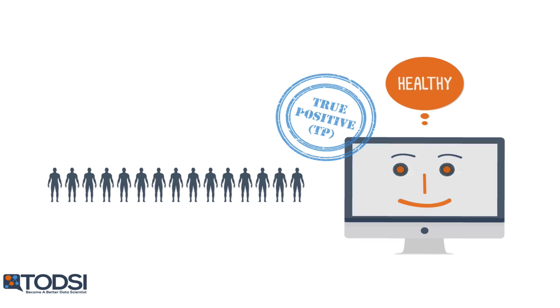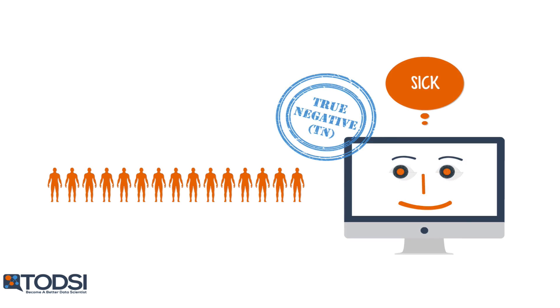Let's illustrate this by looking at a two-class classification problem, where a data point is either considered positive or negative. If the model makes a positive classification, there are two possibilities. The model could be correct, in which case we have a true positive. Or the model could be incorrect and the point is actually a negative, in which case we have a false positive.